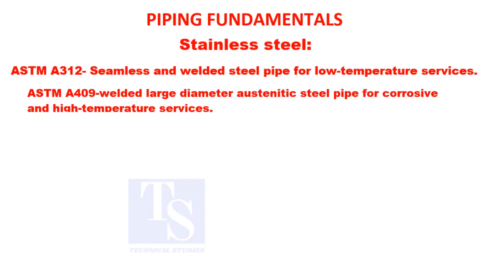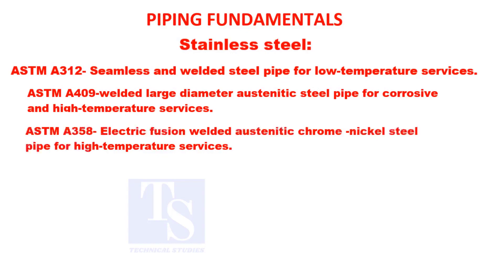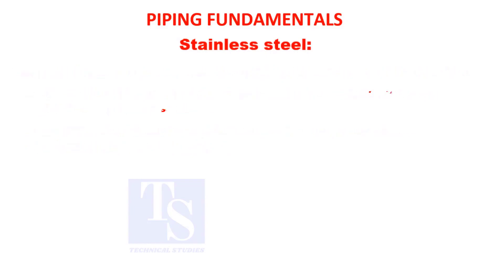ASTM A-409: welded, large diameter, austenitic steel pipe for corrosive and high temperature services. ASTM A-691: carbon and alloy steel pipe, electric fusion welded, for high temperature services. ASTM A-358: electric fusion welded austenitic chrome nickel steel pipe for high temperature services.